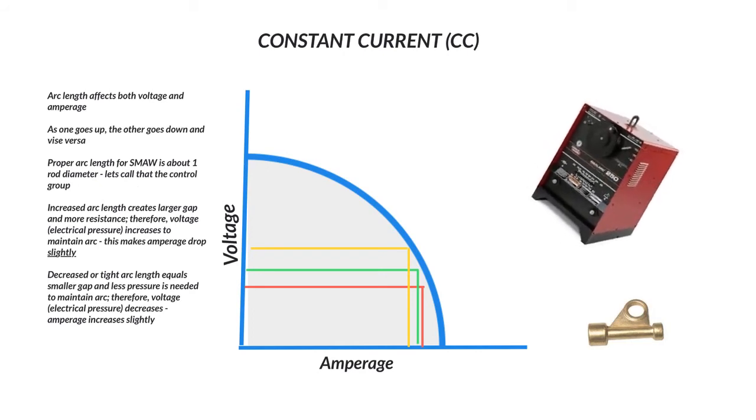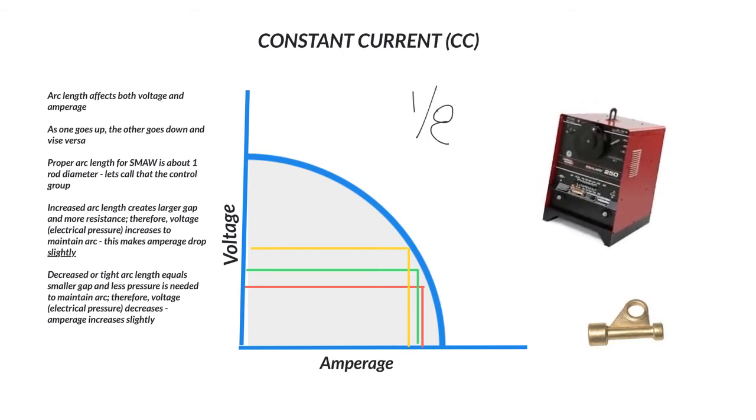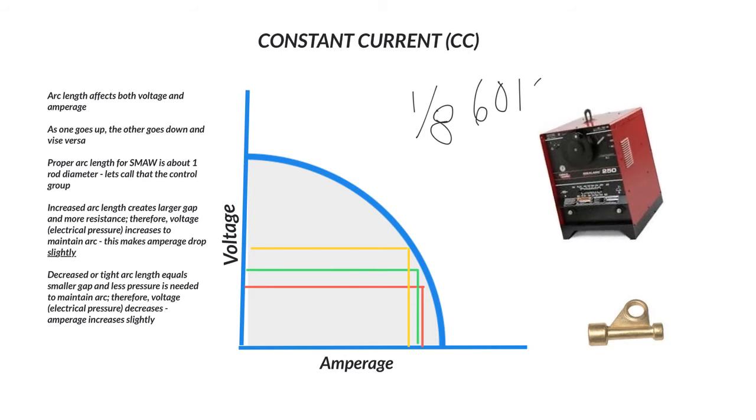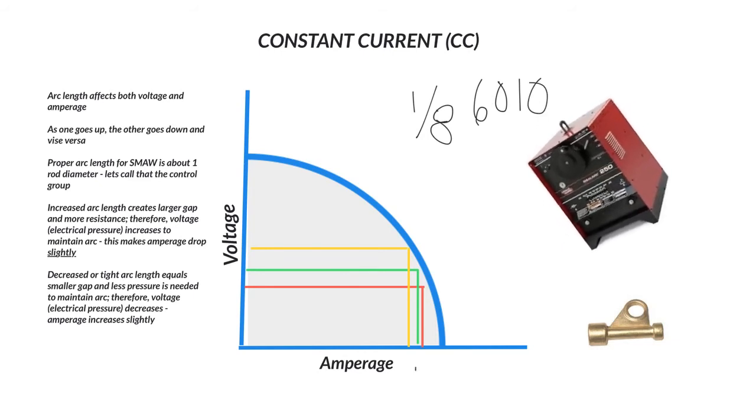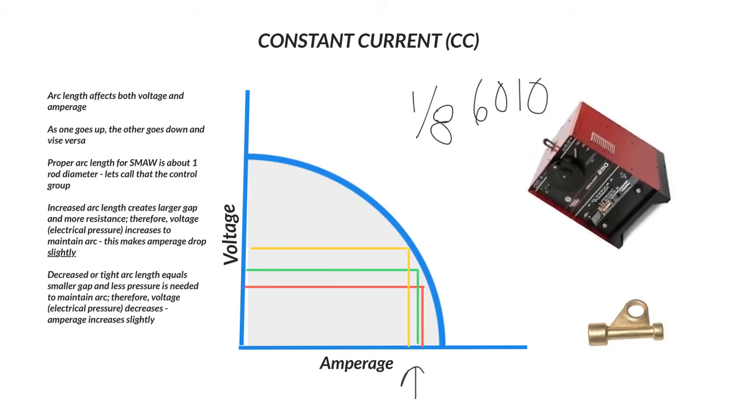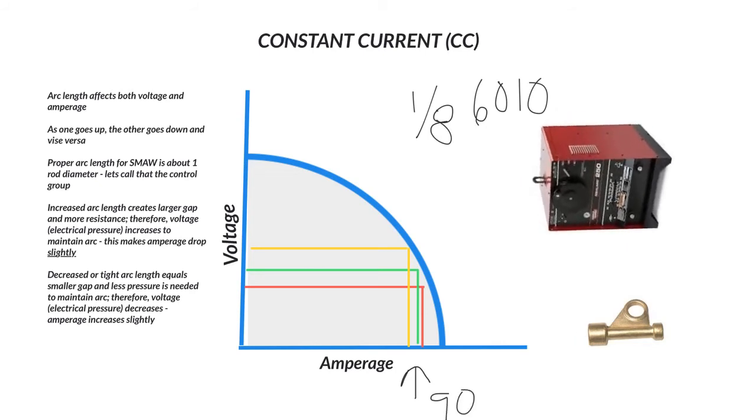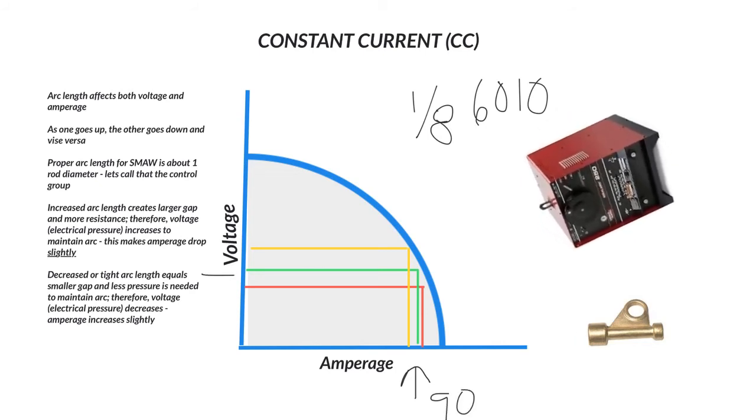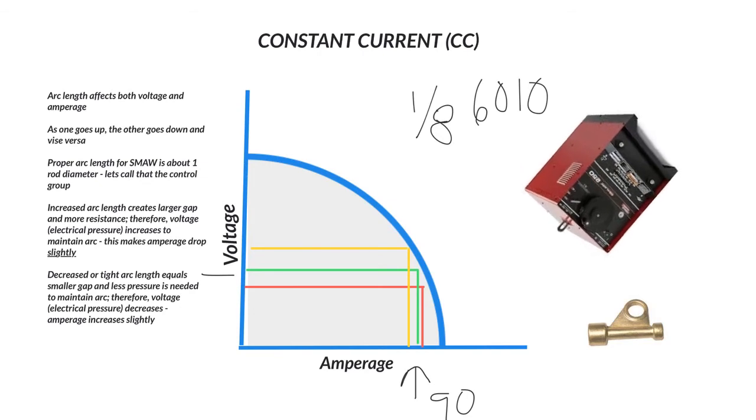So let's just say that we have a 1/8 inch 6010 rod and we're going to run it around 90 amps. So we're going to point right to that green line and see that that's around 90, and then we have somewhere in the 20s for voltage.